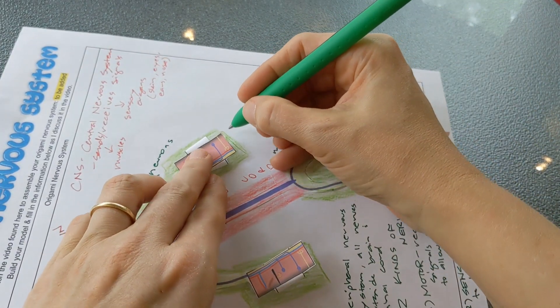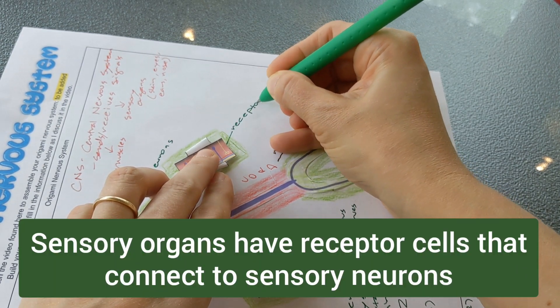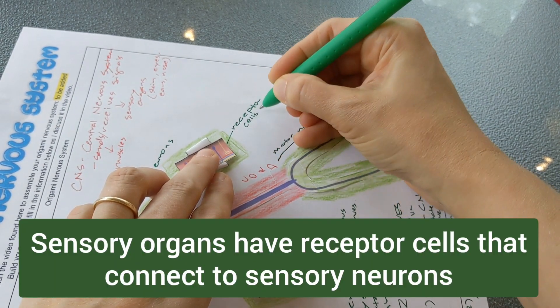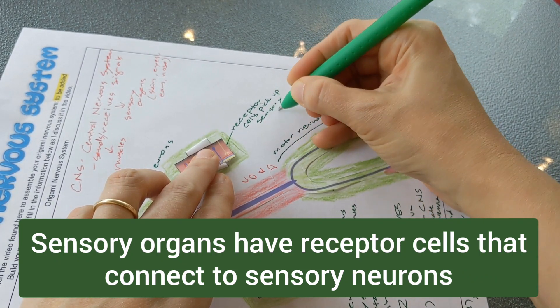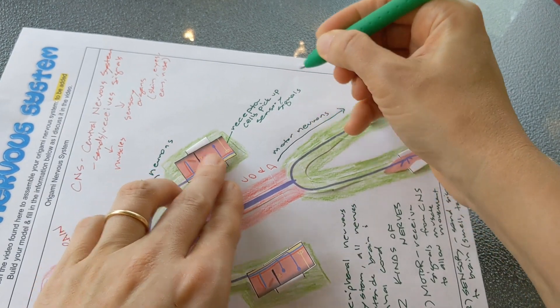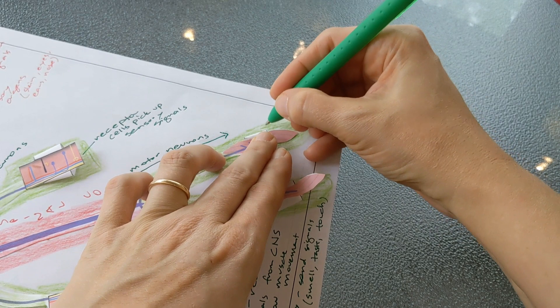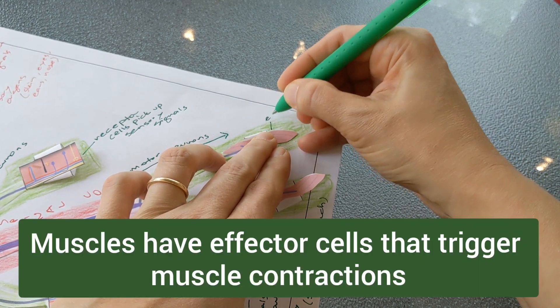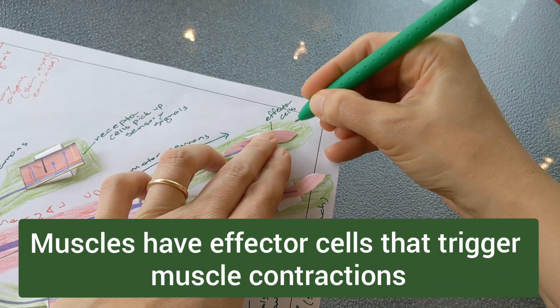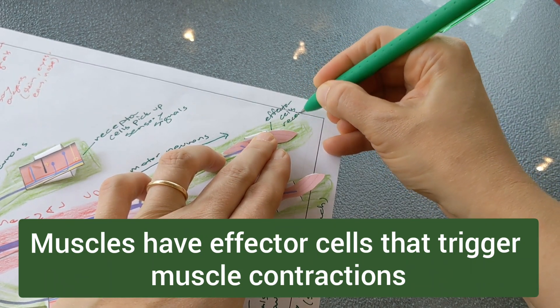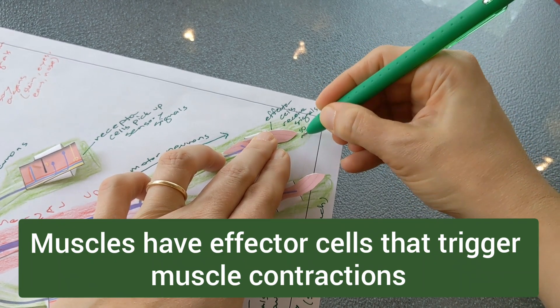In the skin we have these cells called receptor skin cells. So the receptor cells pick up signals, we'll say sensory signals, and that's what is then relayed to the brain. And in muscles we have cells called effector cells and those receive signals so muscles can move.